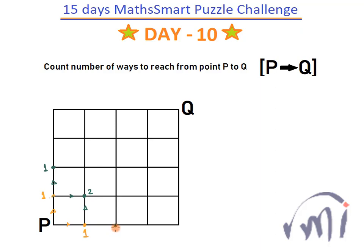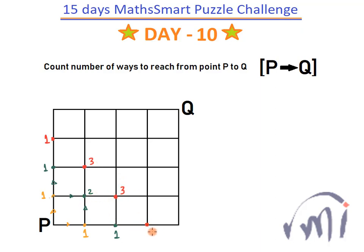Now for the points on this diagonal: this one can be reached only from here, so it has one way. This point has 1 plus 2 equals three ways, this point has 2 plus 1 equals three ways, and this point has only one way to reach. If you remember, this is almost like Pascal's triangle, and yes you can use Pascal's triangle which we will discuss later.